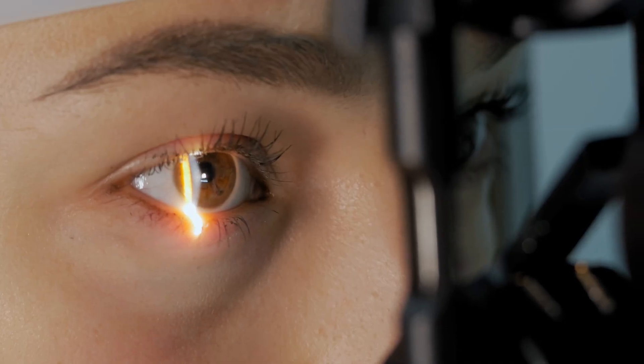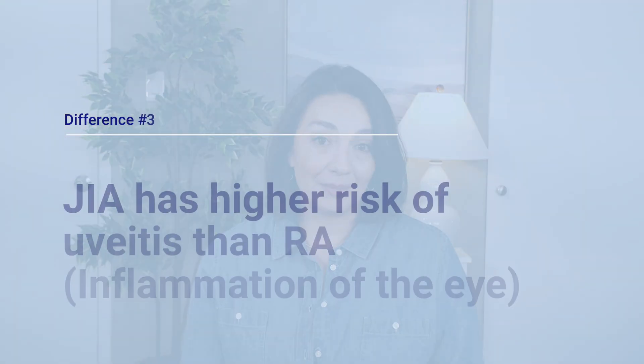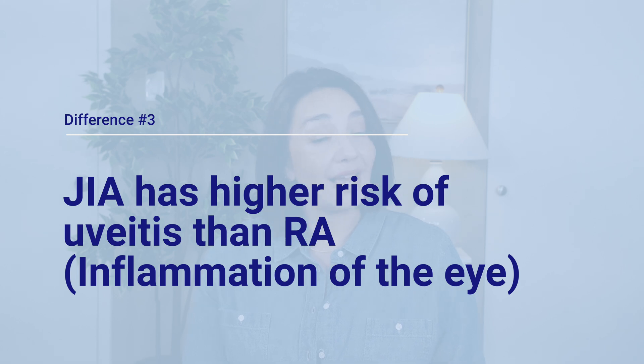Once a diagnosis is made, the differences don't end there. When caring for someone with RA, we keep an eye on their joints, but also their bone and heart health. When caring for someone with JIA, we have to keep an eye on — well — their eyes. People with JIA have a higher risk of developing uveitis than those with RA, and depending on the type of JIA and blood test results, they may have such a high risk that they need to proactively screen for it with regular eye exams. Uveitis is inflammation within the eye and can happen in many autoimmune conditions.